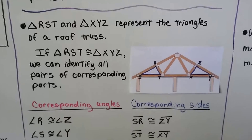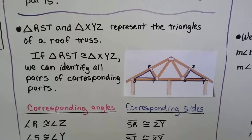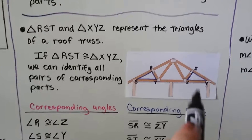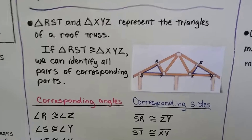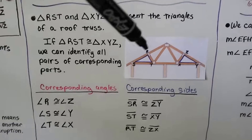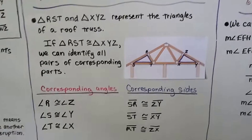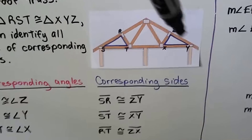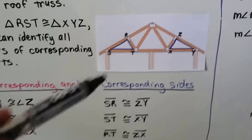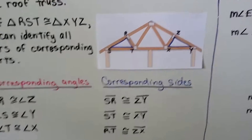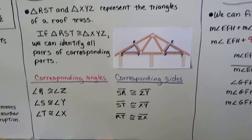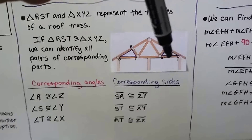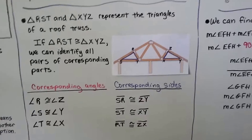We've got triangle RST and triangle XYZ — they represent the triangles of a roof truss, the supporting beams of a roof. If triangle RST is congruent to triangle XYZ, we can identify all pairs of corresponding parts: angles R with Z, S with Y, and T with X. Corresponding sides: SR is congruent to ZY, ST is congruent to XY, and RT is congruent to ZX. It looks like a line of reflection where one triangle flipped over to the other.